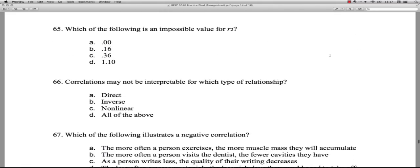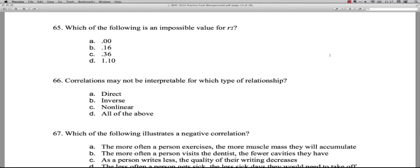Question 65: Which of the following is an impossible value for R squared? R squared means you've taken the correlation coefficient, which is called R, and you squared it. Because correlation values go from zero to one, it can be positive or negative. When you square them, they're going to get smaller. They're going to go closer to zero because, you know, it's like taking a half of a half is a quarter. What's an impossible value for R squared? Zero? No, you can get that. Zero squared is zero. Point 16, you can get that. If you started with a correlation of 0.4, you'd end up with an R squared of 0.16.